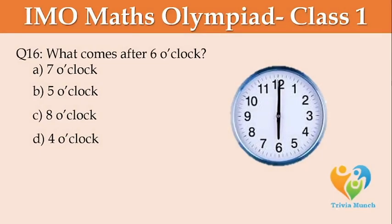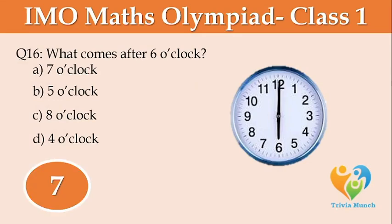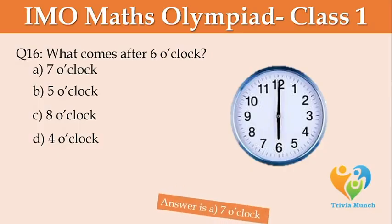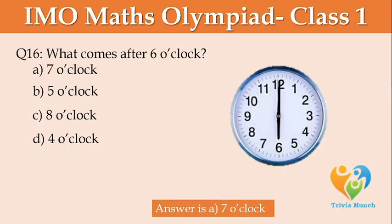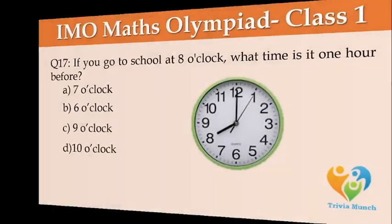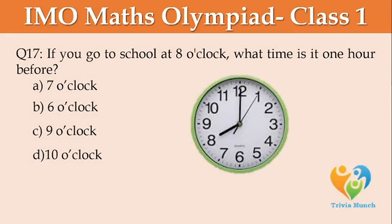What comes after 6 o'clock? Option A: 7 o'clock, Option B: 5 o'clock, Option C: 8 o'clock, Option D: 4 o'clock. If you go to school at 8 o'clock, what time is it 1 hour before? Option A: 7 o'clock, Option B: 6 o'clock, Option C: 9 o'clock, Option D: 10 o'clock.